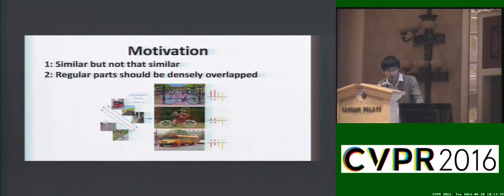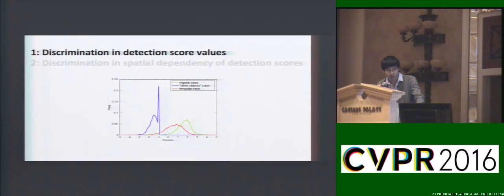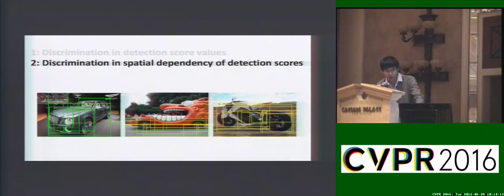Second, for regular object images, the regular parts should be densely overlapped, and this smoothness could be broken in unusual object images due to the existence of unusual parts. So, if we train a weakly supervised object detector for regular object images and other object images, the detection scores should be positive and negative respectively, and for unusual object images the score values should be in between. From the perspective of the spatial distribution of the detection scores, for regular object images the positive region scores should be densely overlapped, and we can see that for unusual object images the smoothness could be broken.